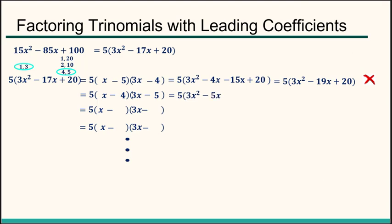I've got the 5, of course. Then, I've got x times 3x. That's 3x². Minus 5x. Minus 12x plus 20. All right. Let's see what that adds together.